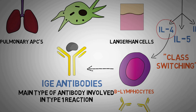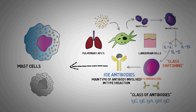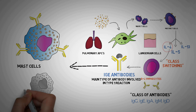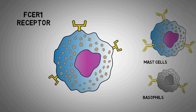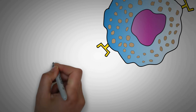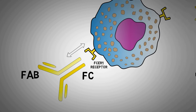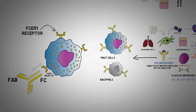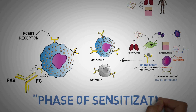This IgE antibody that is produced can identify the allergen that led to the initial sensitization. This antibody gets attached to mast cells and basophils, which are the two most important cells involved in type 1 reaction. The mast cells and basophils have a special receptor on their surface known as the FC-Epsilon-R1 receptor. The antibodies have an FC part with which they bind to the cells and a FAB part with which they bind the antigens. The FC-Epsilon-R1 receptor on mast cells and basophils has a very high affinity for the FC portion of IgE antibodies produced as a result of class switching of B cells. These antibodies attach to these receptors, completing the phase of sensitization. We now have mast cells and basophils armed with IgE antibodies, waiting for the same allergen to enter the body.